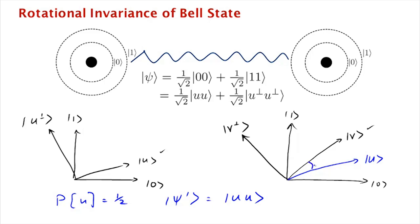Now let's imagine that this angle between u and v is theta. So now when we measure the second qubit in the v, v perp basis, the probability that we see v is now going to be cosine squared theta.